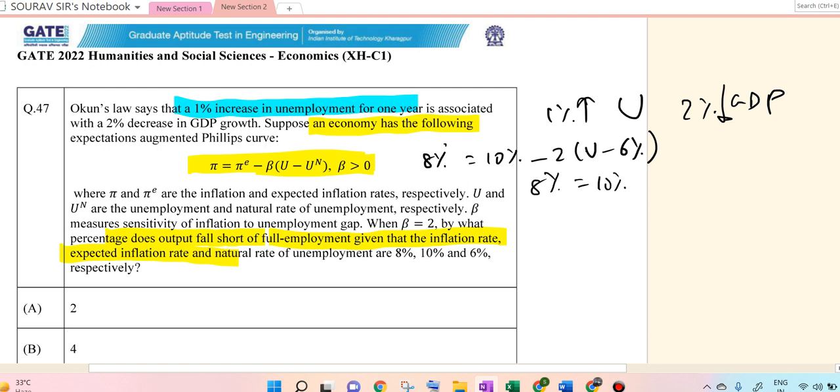So 2u = 22% - 8%. Therefore 2u = 14%, so u = 7%.